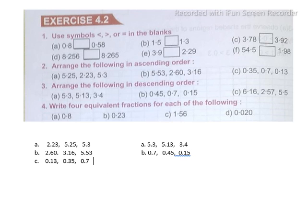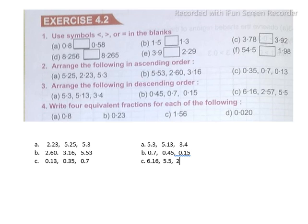Descending order Part C numbers: 6.16, 2.57, and 5.5. 6.16 is the greatest, so 6.16 comes first. After that comes 5.5. And 2.57 is the smallest number among the three. This is descending order, and previously we arranged them in ascending order — ascending order goes from smallest to largest, descending order goes from largest to smallest.